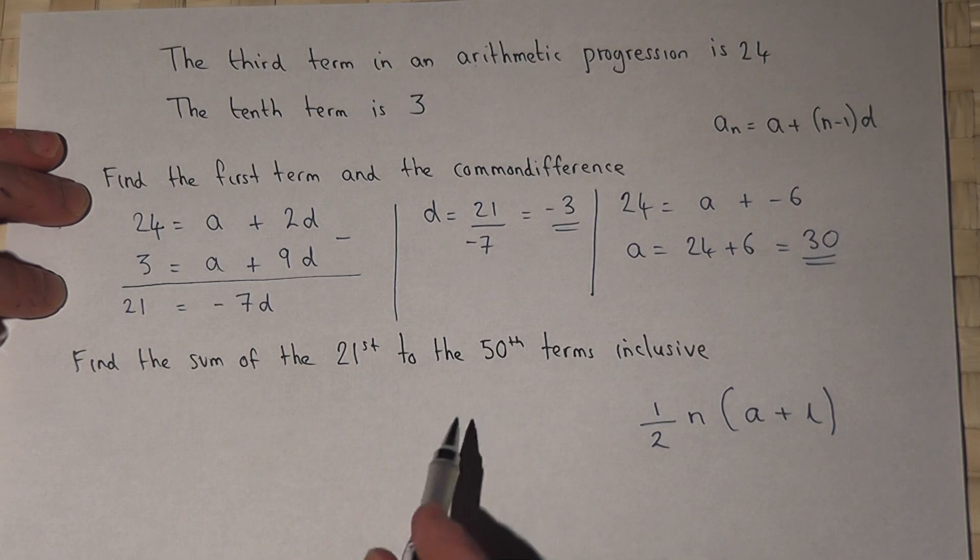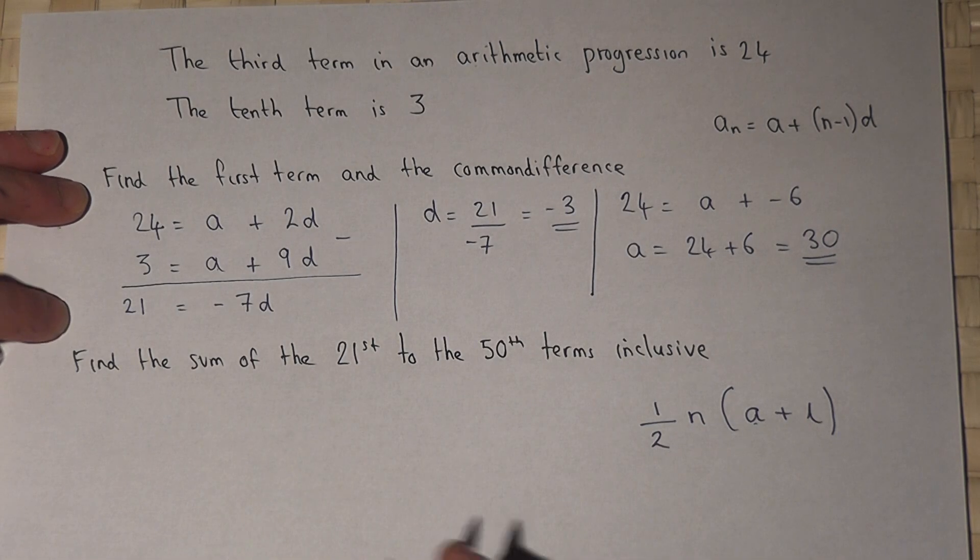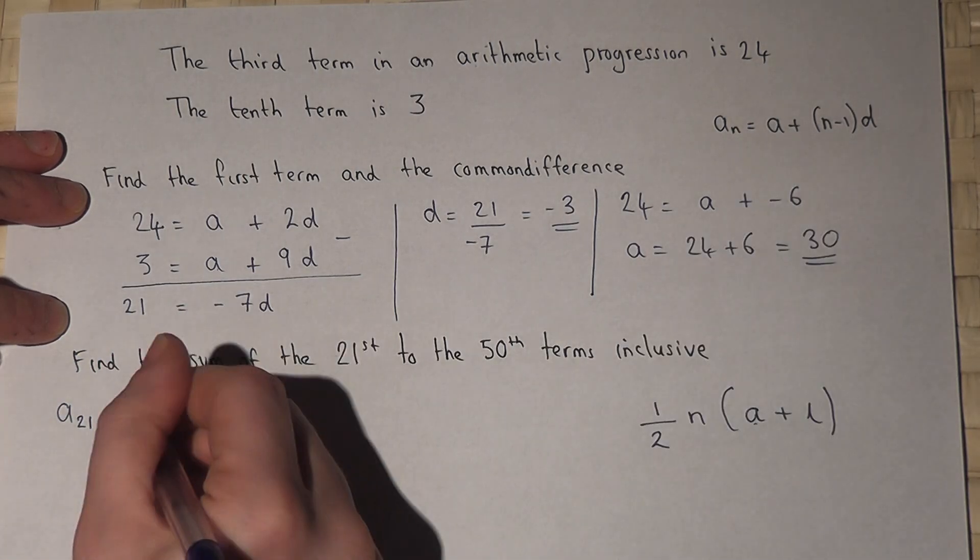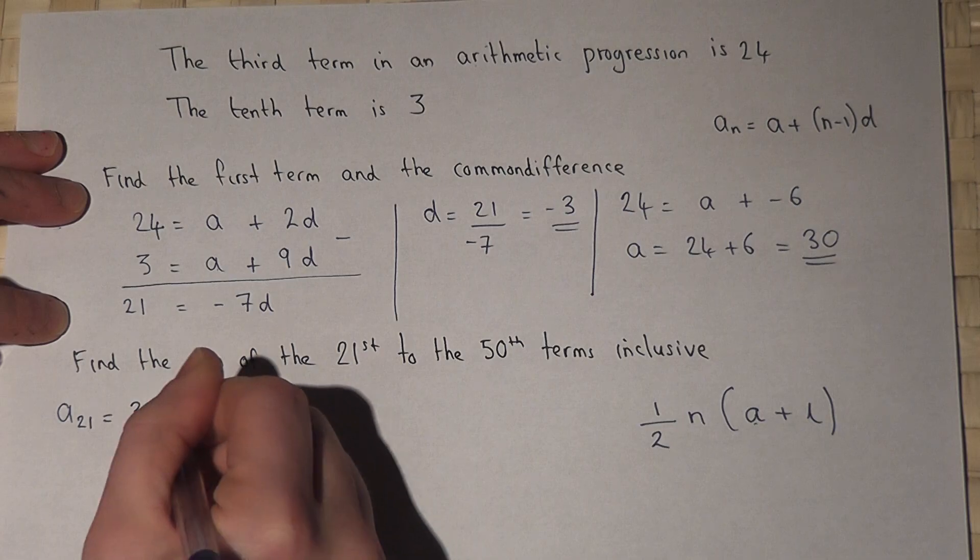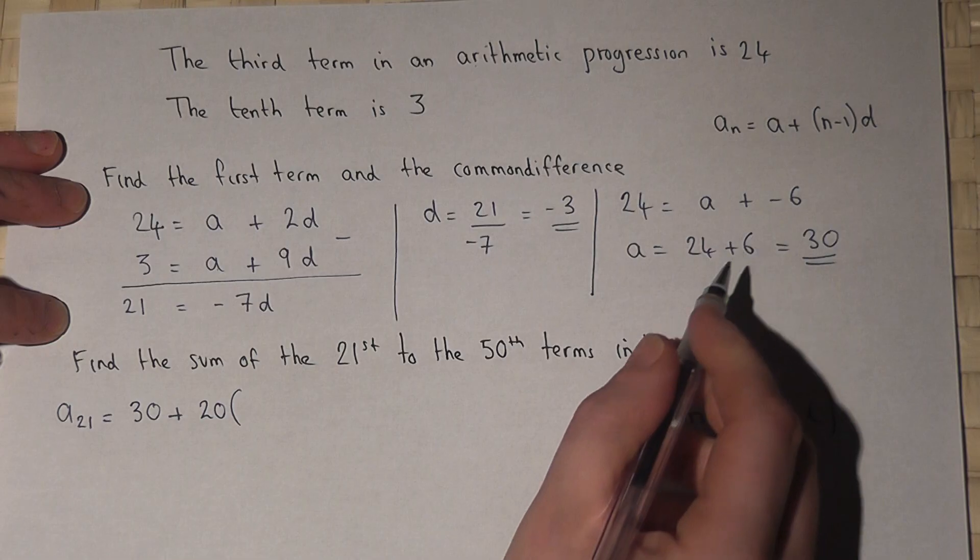Now in our case, the first term we want to find is the 21st. So a_21 equals a plus n minus 1 is 20, 20 lots of d, which is minus 3.